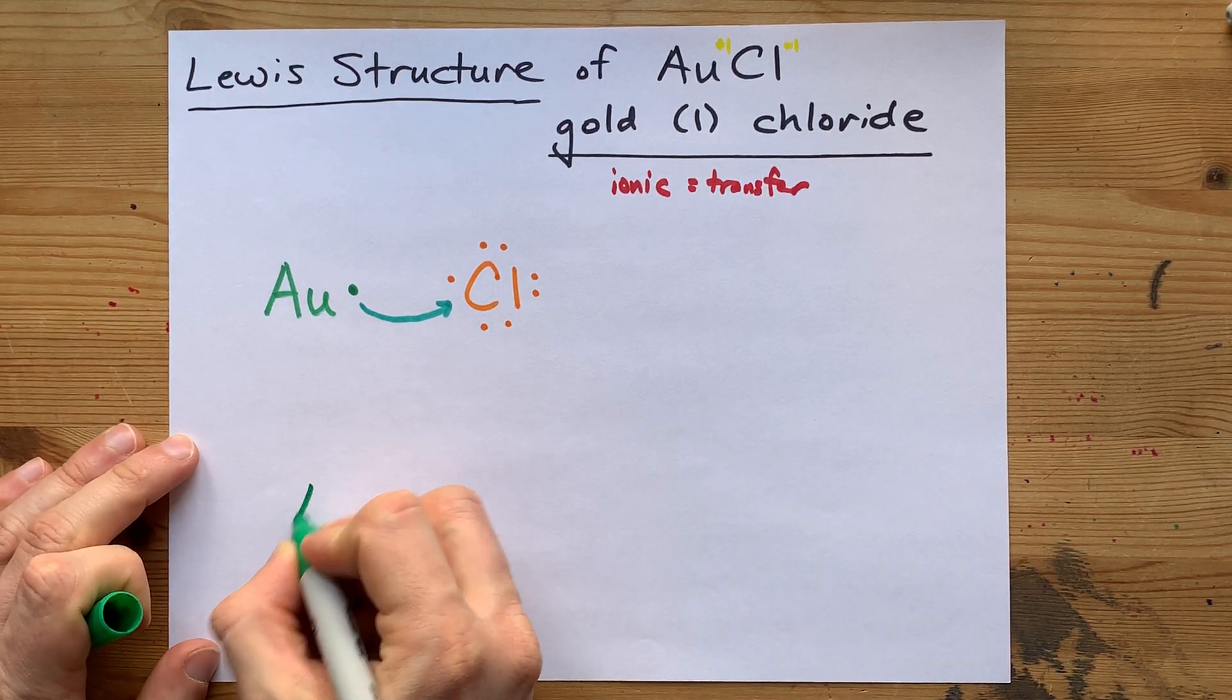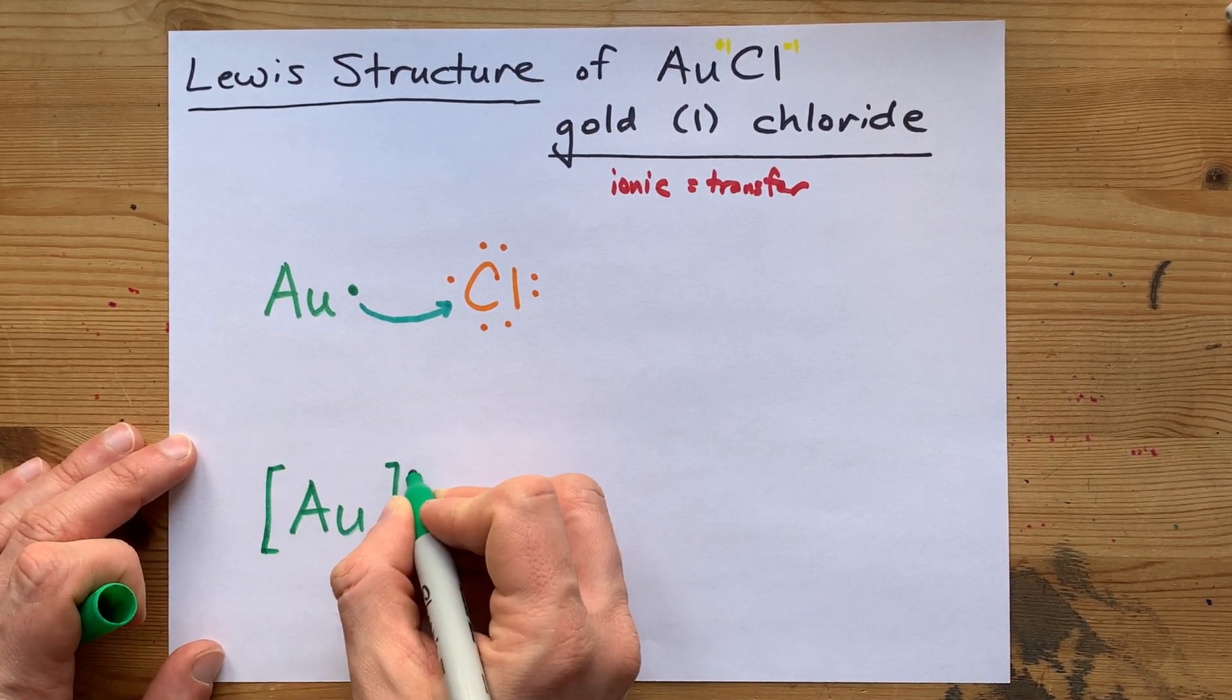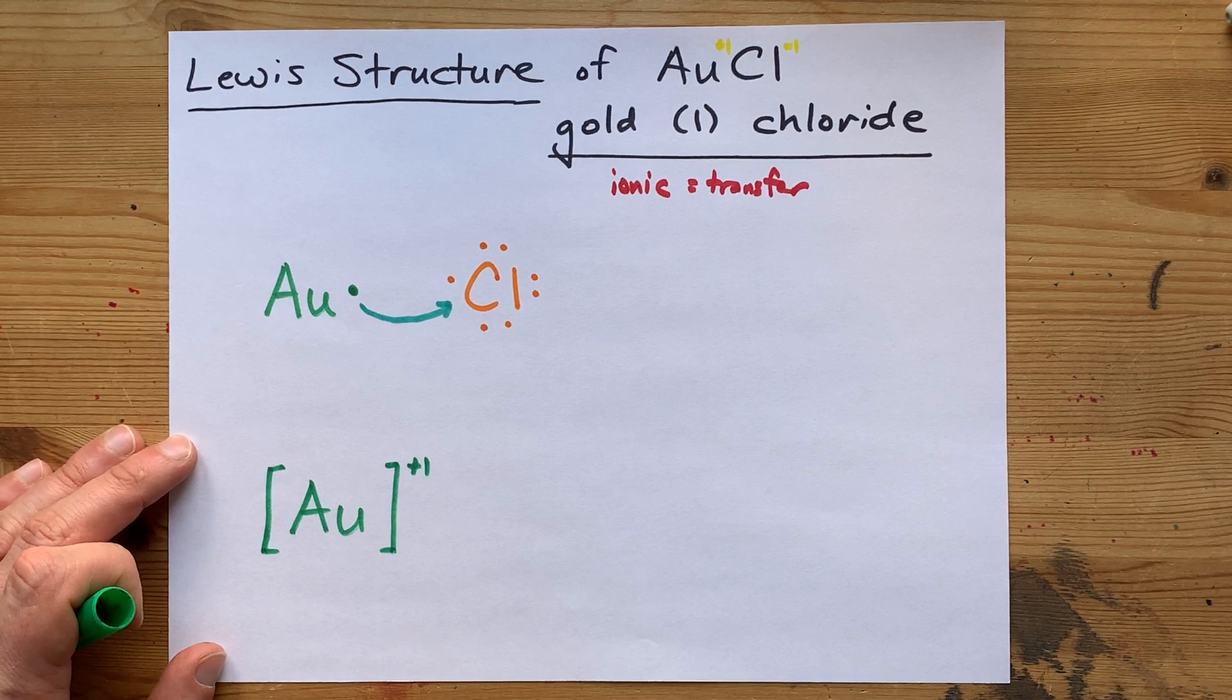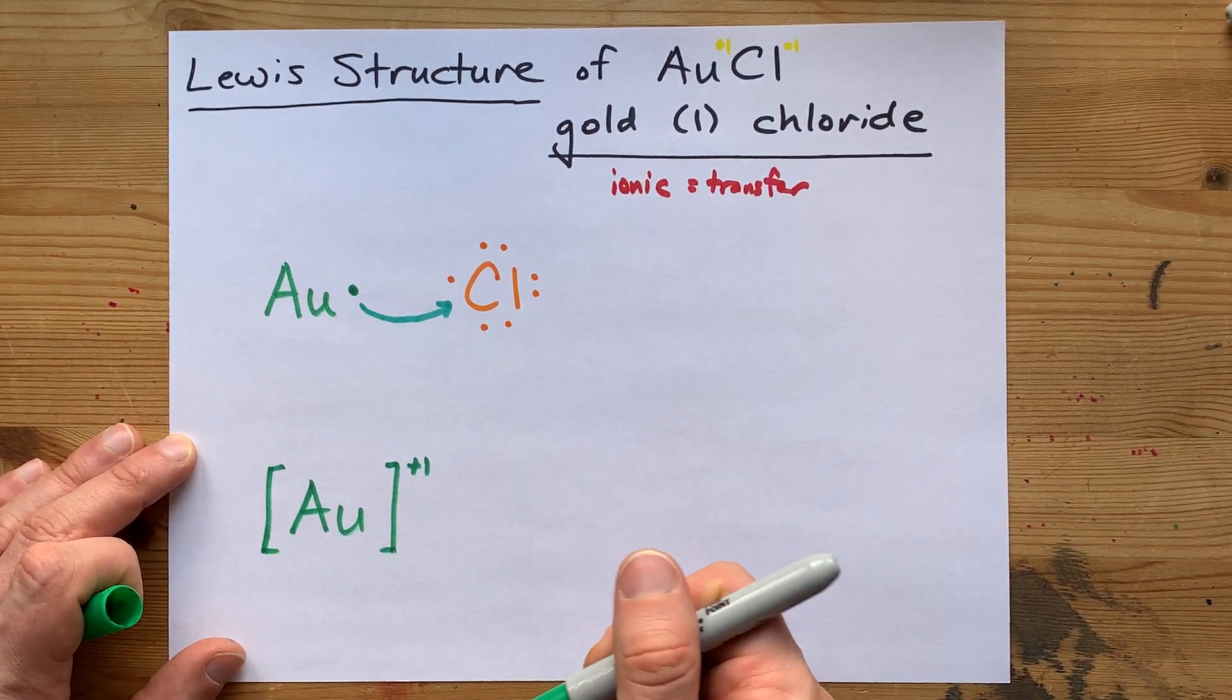That means that you'll draw the Au without that electron because it gave it away. It now has a plus one charge because it lost its electron, or that one electron, I should say.